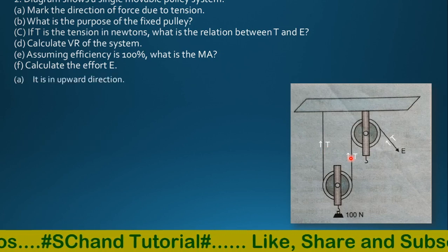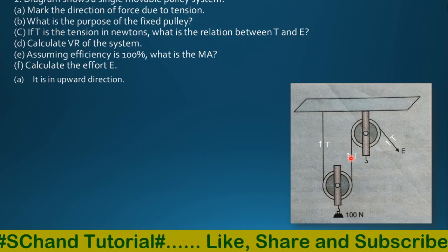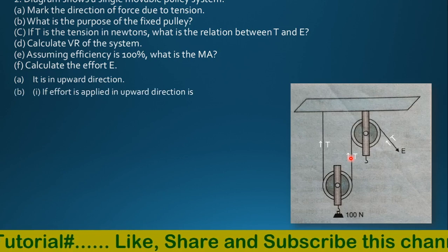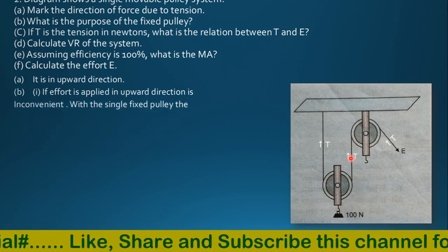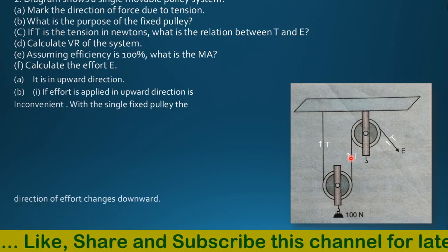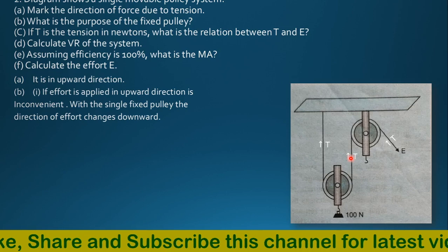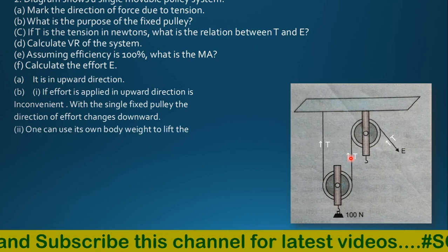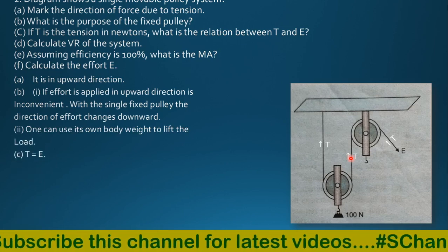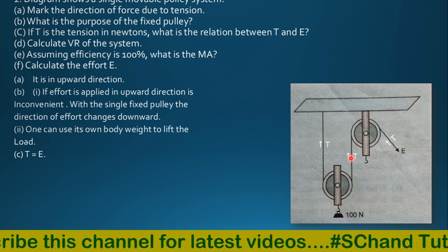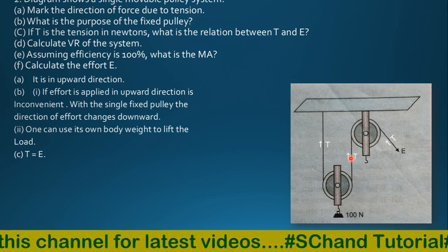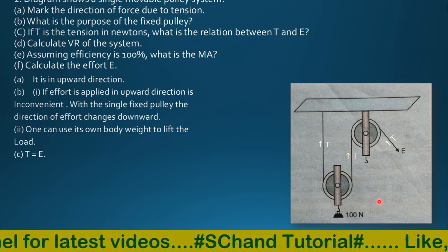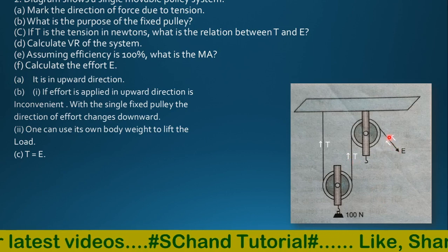The direction of the tension is in the upward direction. The purpose of the fixed pulley: if the effort is applied in an upward direction, it is inconvenient. So with a single fixed pulley, the direction of the effort is changed to downward. If it is downward, one can use their own body weight to lift the load, making it easier. If t is the tension in Newtons, the relation is t equals e — tension equals effort.